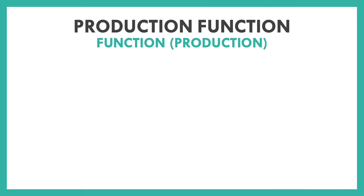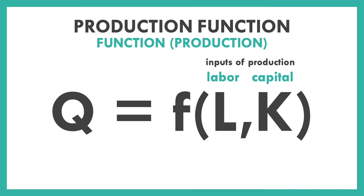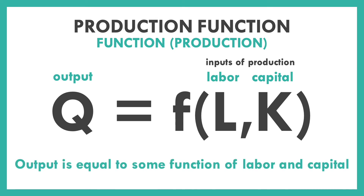In production, our equation looks something like this. Instead of a function of x, we have a function of L and K. L and K are just our two major inputs in production — labor and capital. In economics we use K for capital since we use the letter C for other things, specifically costs. So we have our workers and our machinery — some combination of those. We plug those into some function and out comes our output, Q, which stands for quantity. The quantity we make is equal to some function of our labor and capital.